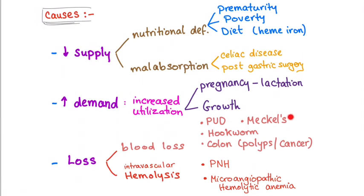Meckel's diverticulum sometimes contains gastric tissue, so it can bleed. Hookworm infection — such as Ancylostoma duodenale or Necator americanus — is another cause. Colon polyps can bleed, and colon cancer can bleed as well. All of these lead to blood loss, which leads to iron deficiency anemia.